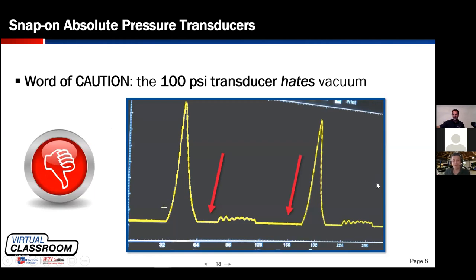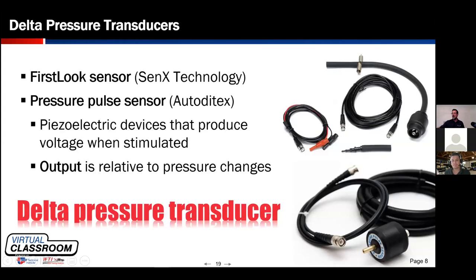Unfortunately they're both called PV350s — there's no different part number to distinguish them. Several people have reached out saying they bought this transducer as recommended and it doesn't work. That's why I mention it — so you don't fall into the same trap. All along we've been talking about an absolute transducer: one that delivers a voltage value that equates to a pressure value.